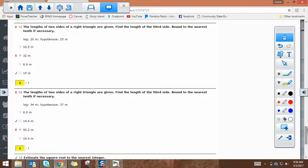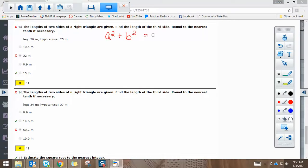Okay, now we're talking about a right triangle. So this is the Pythagorean Theorem. They're giving you the lengths of two of the sides, and you have to find the length of the third side. 13 and 14 are the same type of problem, just with different numbers. So the Pythagorean Theorem is a squared plus b squared equals c squared.